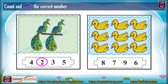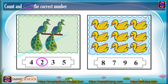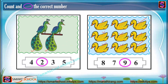Let's see the next picture. Here are ducks. Can you count the ducks? One, two, three, four, five, six, seven, eight, nine. Right — nine. Let's circle the number nine.